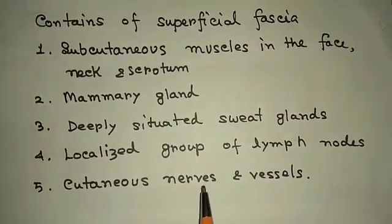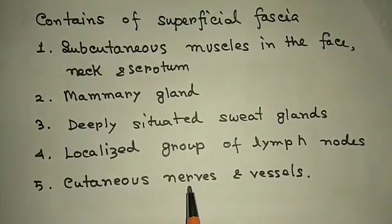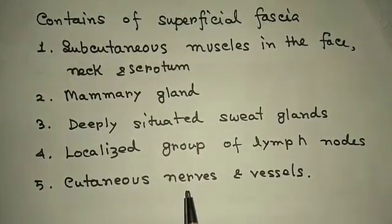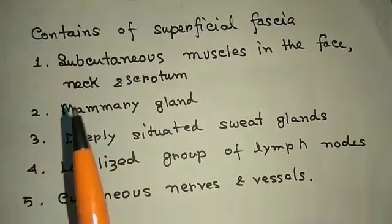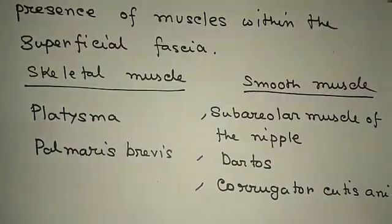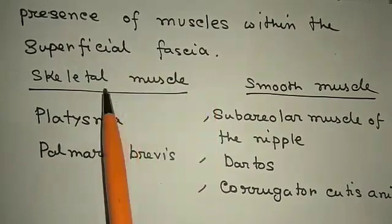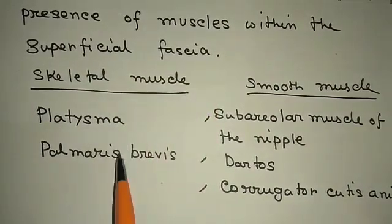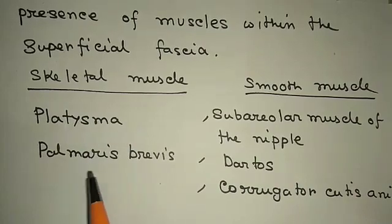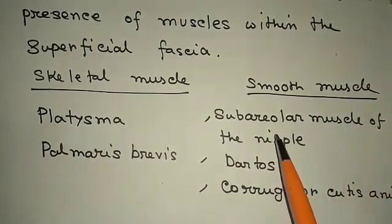It contains six to ten times more proprioceptive receptors than muscle. Muscles within the superficial fascia include skeletal muscles like platysma and palmaris brevis, and smooth muscles like the subreolar muscle of the nipple, dartos muscle, and corrugator cutis ani.